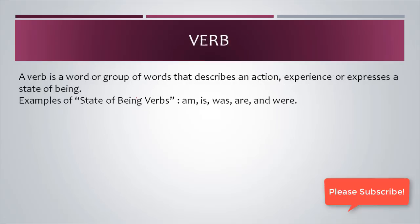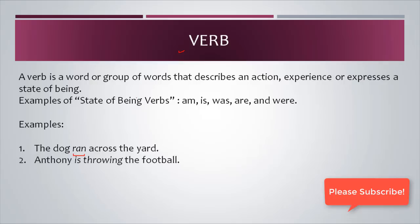The next important part of speech is the verb. A verb describes an action, experience, or expresses a state of being. Words like am, is, was are called helping verbs and signify the state of being. Examples: 'The dog ran across the yard' — 'ran' is an action verb. 'Anthony is throwing the ball' — 'throwing' is a verb. 'The bird sings a cheery song every morning' — 'sings' is a verb.